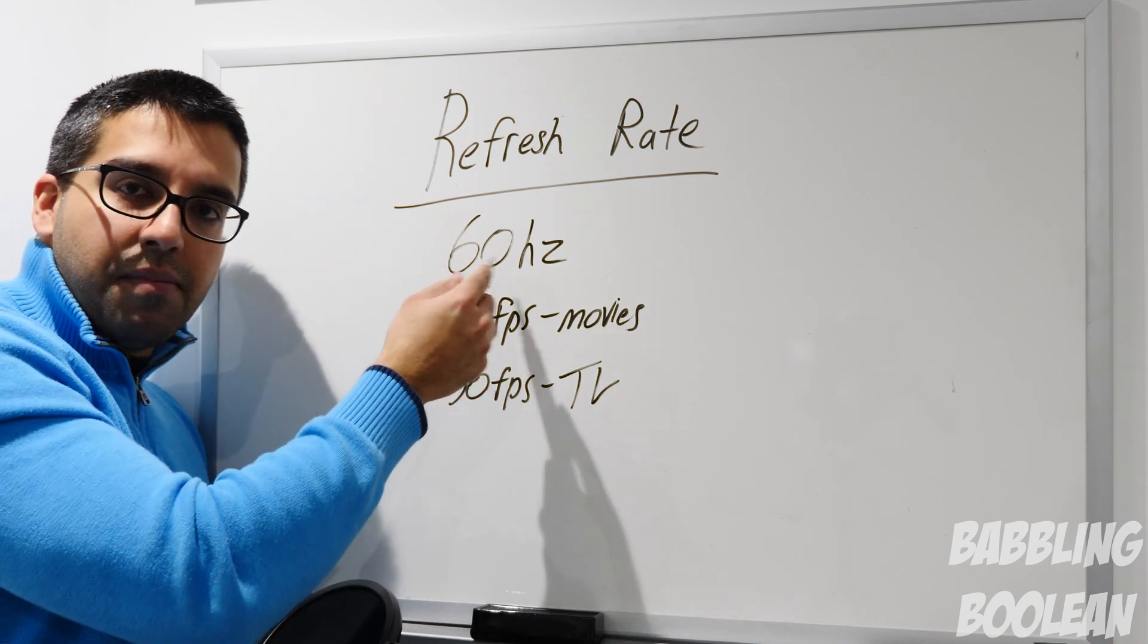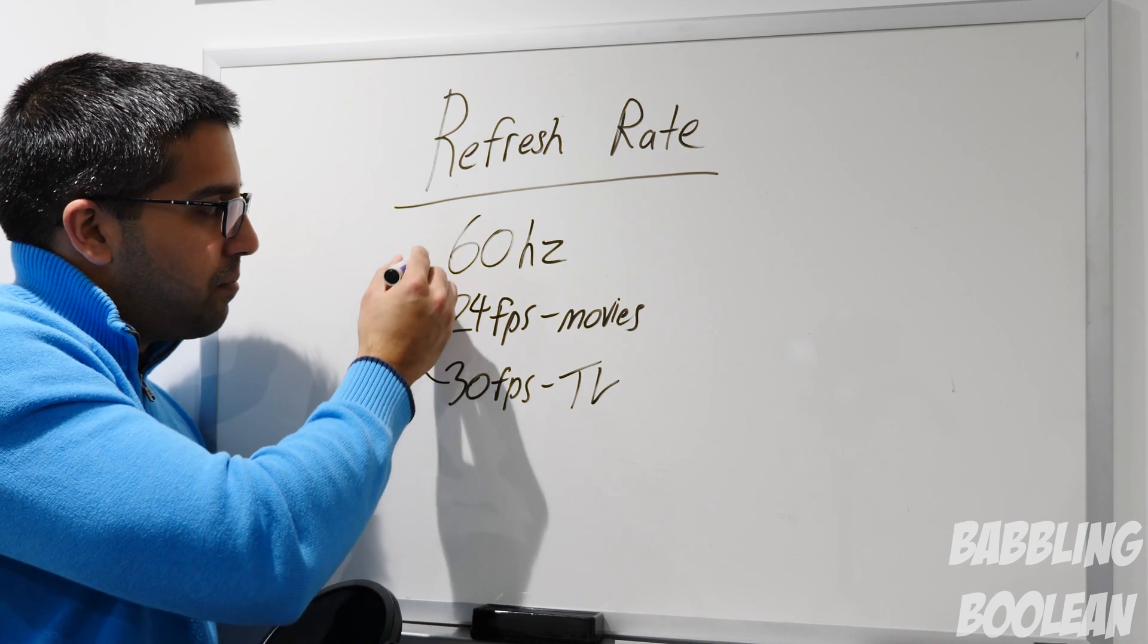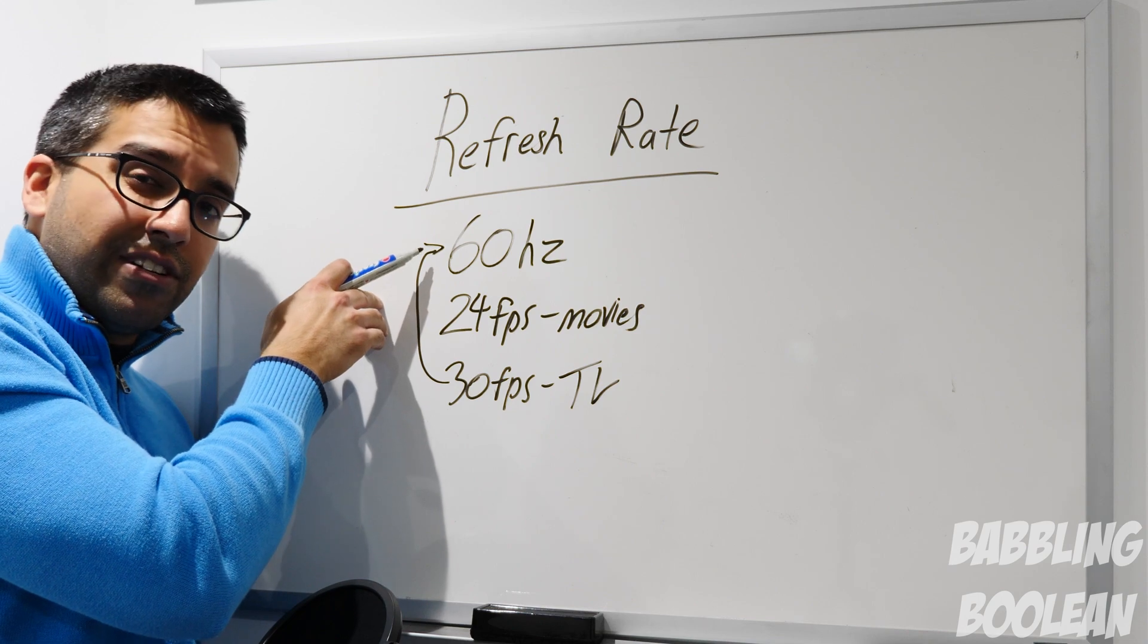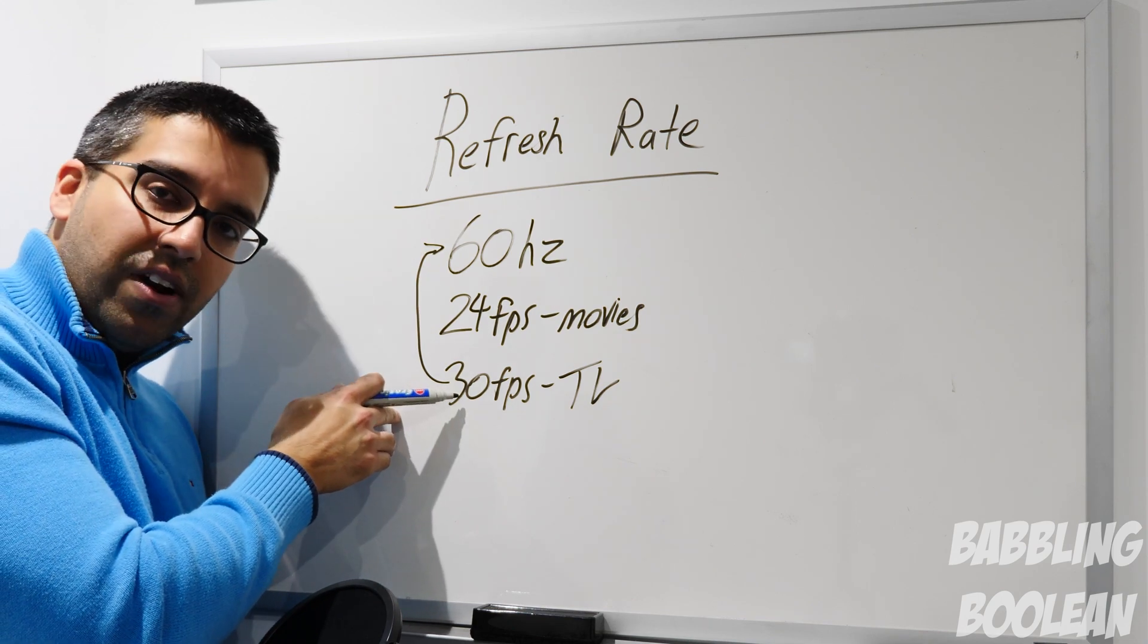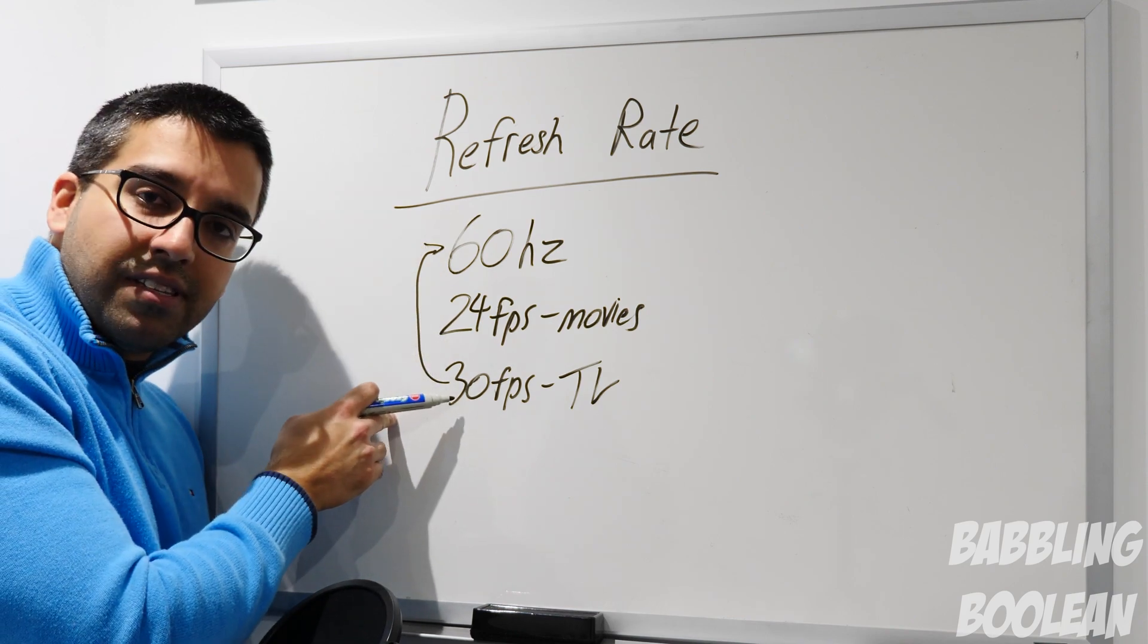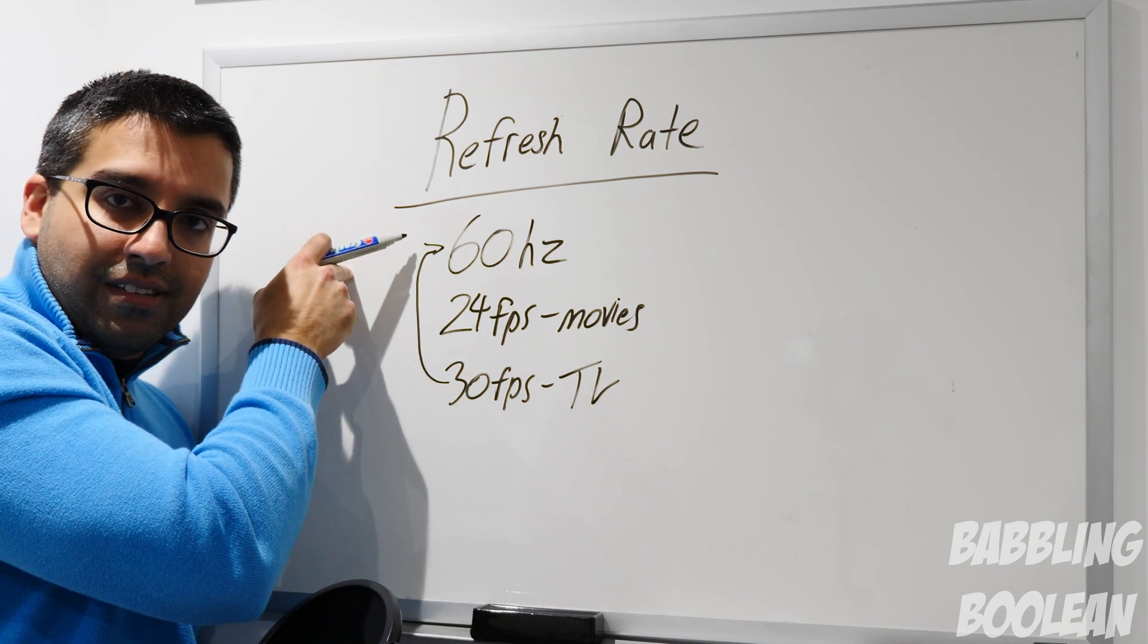So how does it match? How does a 30 match this? Well, what happens is that TVs tend to say, okay, your content is playing back at 30, but I'm refreshing too fast. So each frame, I'm just going to double it to match 60. So there's 30 frames a second, I'm going to double each one to make it into 60.